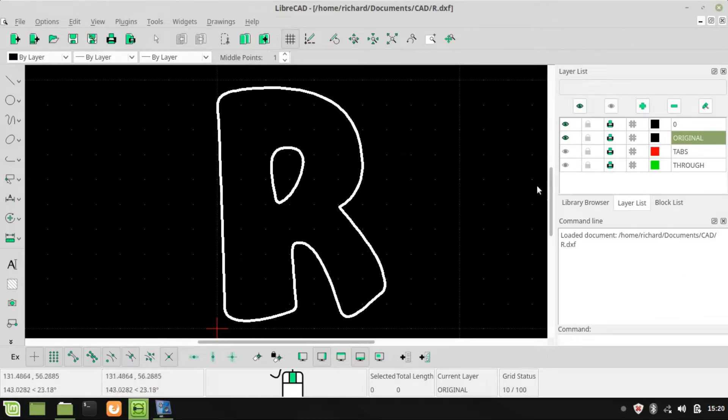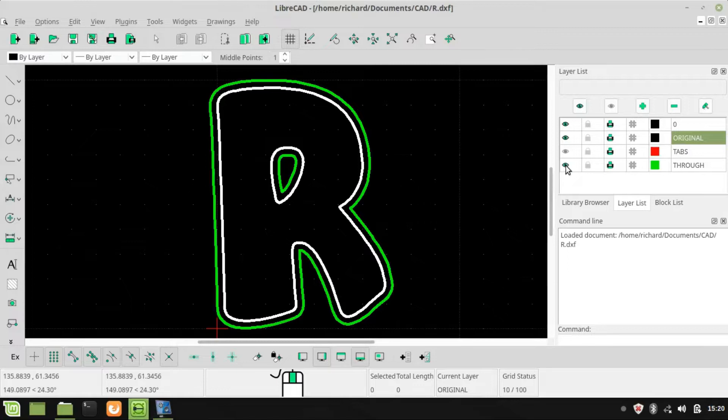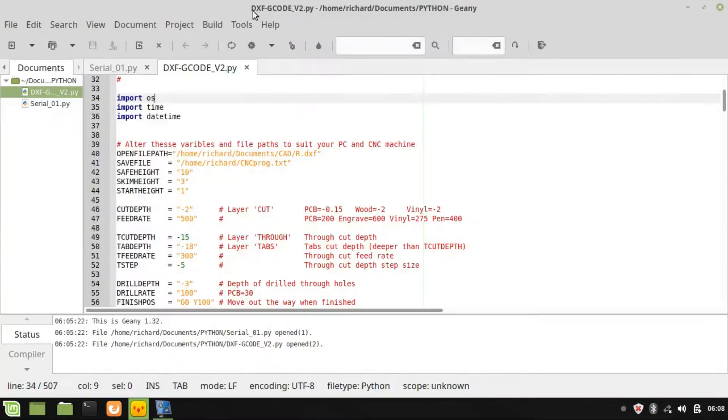Then I opened it in LibreCAD. On a layer called through, I added a three millimeter offset polyline for the cutter compensation. On a layer called tabs, I used a copy of this but with two gaps which will become the tabs that are left when the CNC machine has finished.